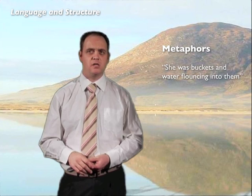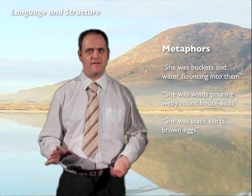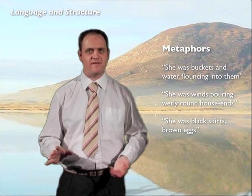Lastly, McCaig uses simple metaphors to help us understand what his aunt was like. She was buckets and water flouncing into them; she was winds pouring wetly round house ends — these convey her energy. And she was black skirts, brown eggs — suggesting she was plain and simple, not into extravagance. The poet uses simple language, but the metaphors build a vivid picture as we read.